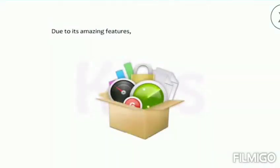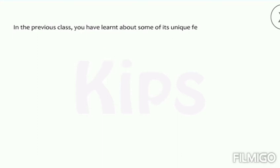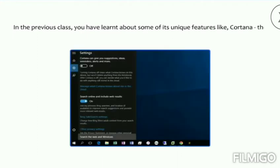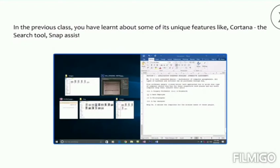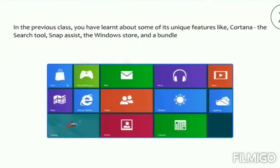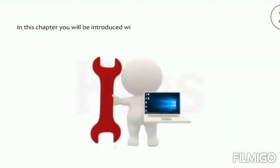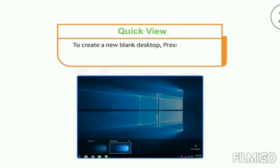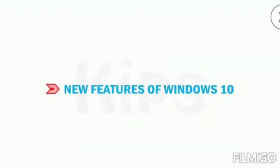Due to its amazing features, it is gaining popularity day by day. In the previous class you learned about some of its unique features like Cortana, the search tool, Snap Assist, the Windows Store, and a bundle of universal apps. In this chapter you will be introduced with some more innovative tools that help to get things done fast. To create a new blank desktop, press Windows key plus Control plus D shortcut key combination. Let us first discuss the new features of Windows 10.